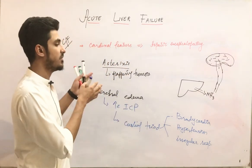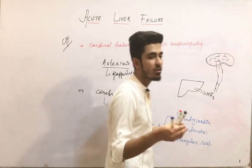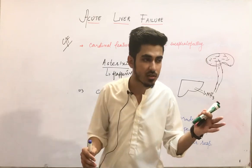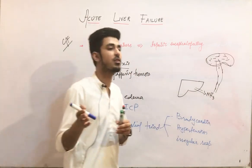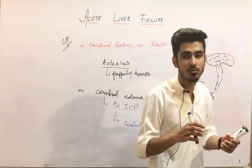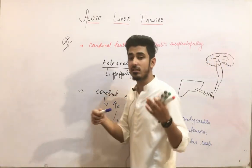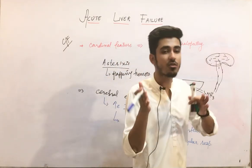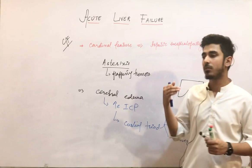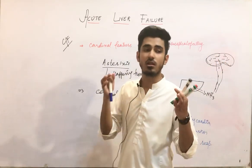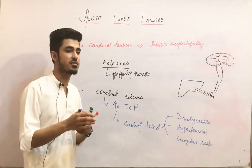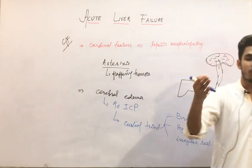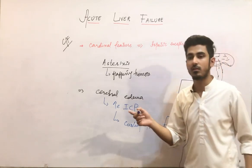These are the neurological manifestations of acute liver failure. Other manifestations also occur: cardiovascular manifestations, renal failure, pulmonary manifestations, and coagulopathy or DIC. Coagulopathy develops because the liver is responsible for forming clotting factors — when those clotting factors are not formed, it leads to coagulopathy and DIC.